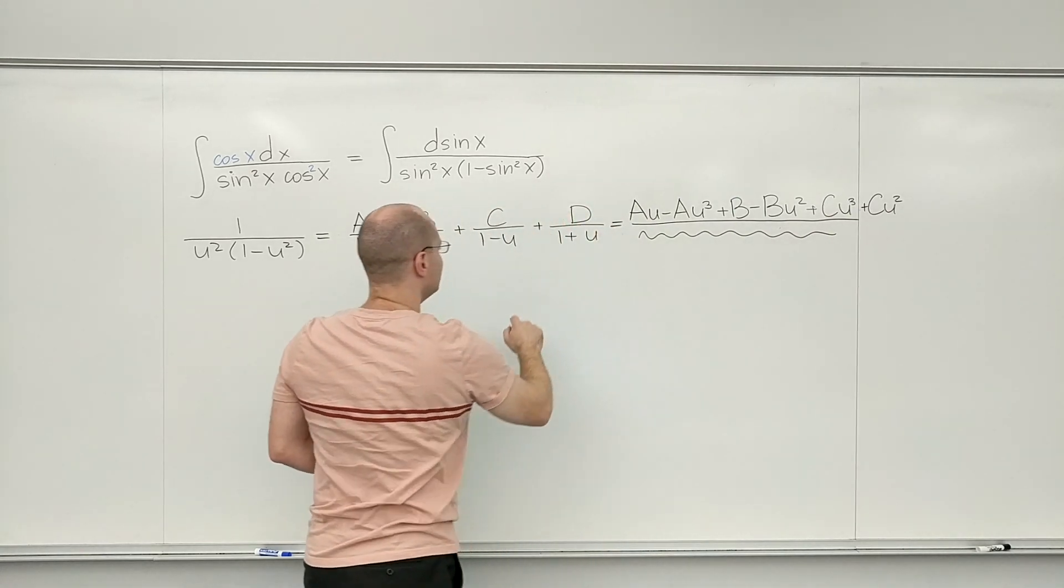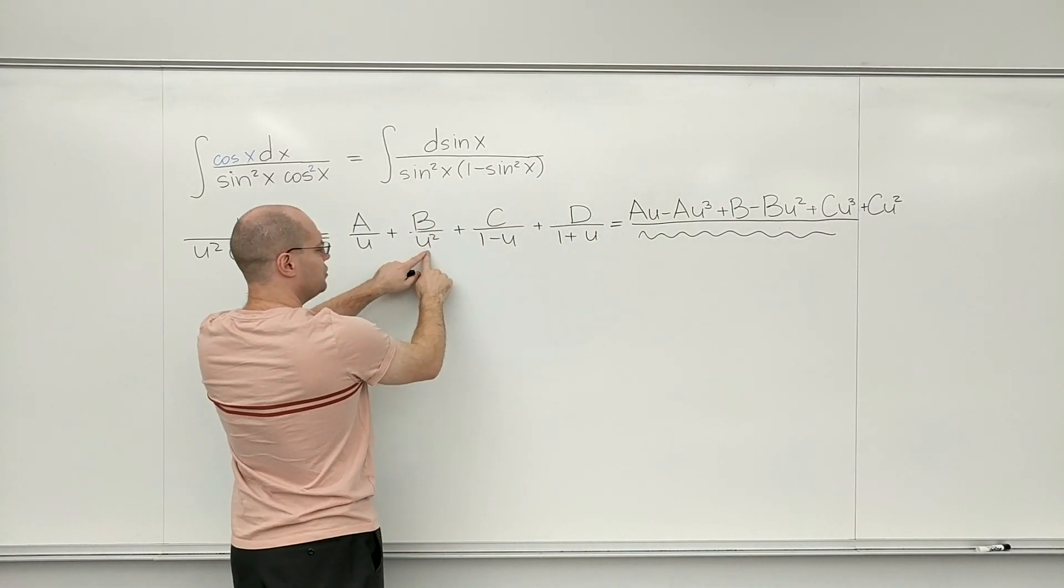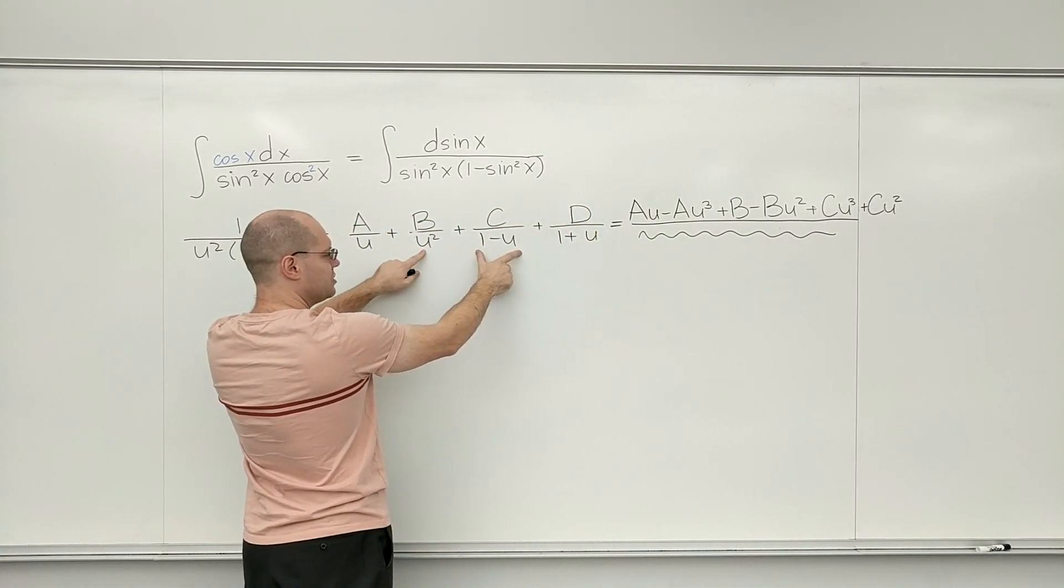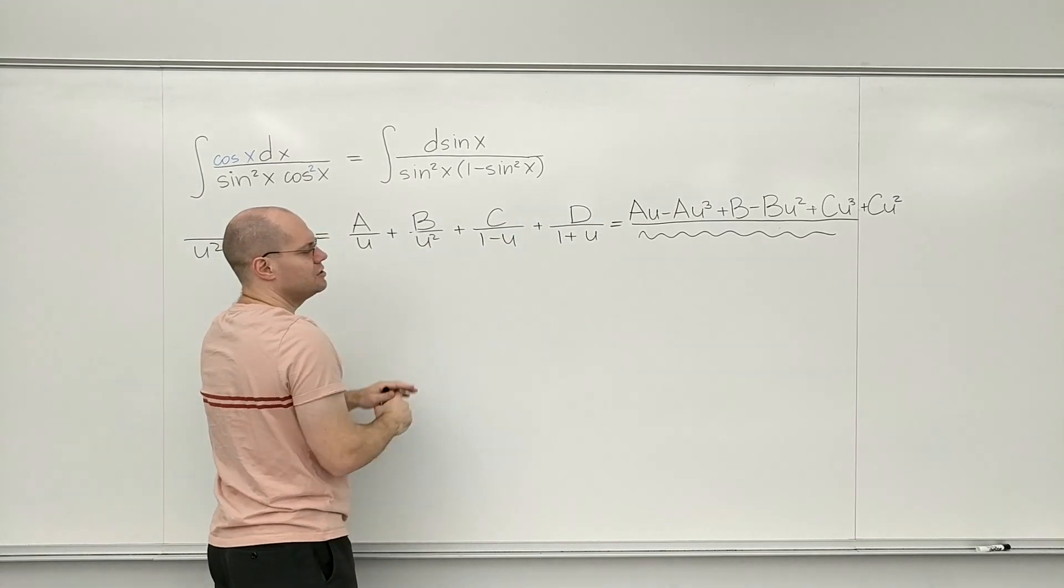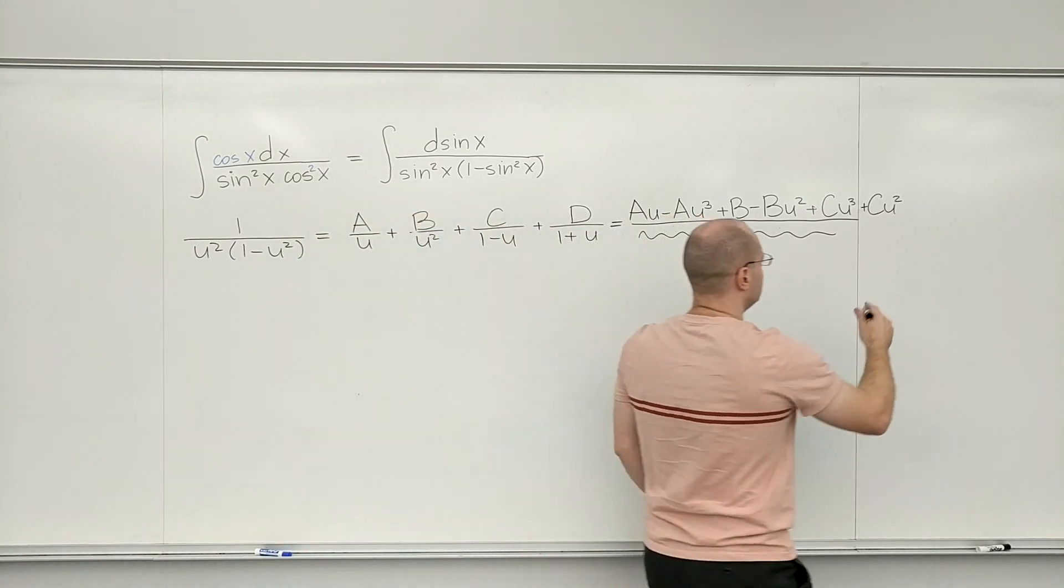And D gets multiplied by u squared times 1 minus u. So in other words, it becomes u squared minus u cubed. So D u squared minus D u cubed.